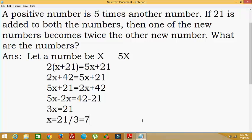And the other number will be 5 times x, that is 5x, which is equal to 5 times 7, 7 times 5, that is 35. One number will be 7 and another number will be 35.